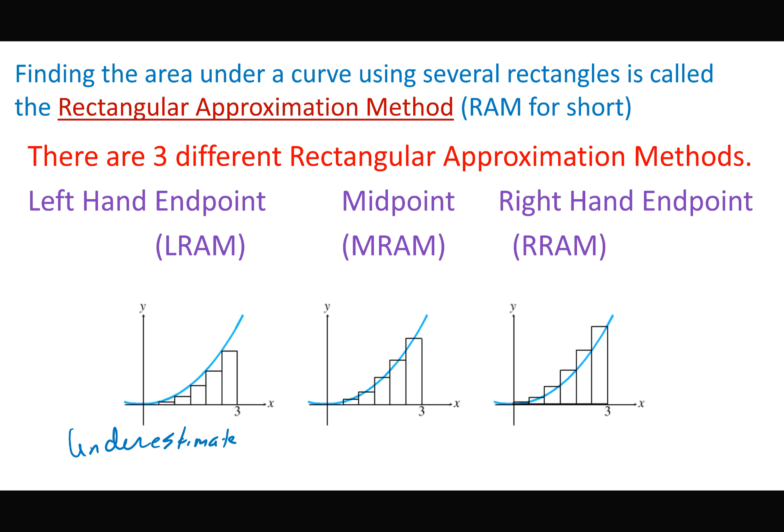MRAM takes the midpoints of the top segment of each rectangle to lie on the curve. MRAM is more accurate — I don't have those gaps under the blue curve, or at least they're smaller. Some rectangle goes above the curve, some below, so they start to cancel each other out, giving a more accurate picture.